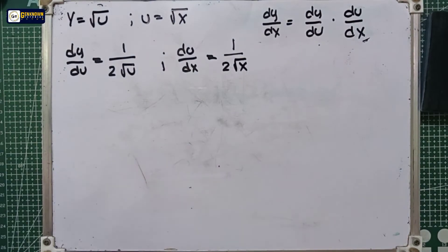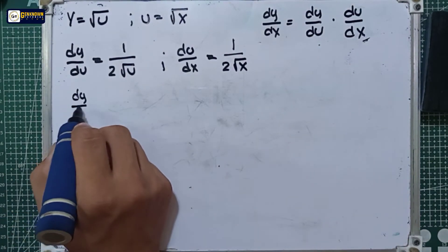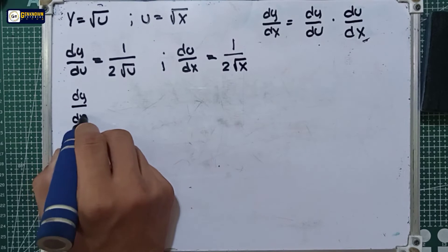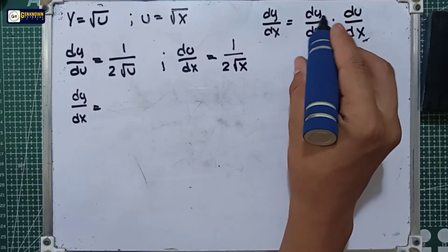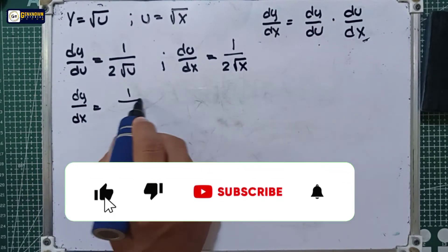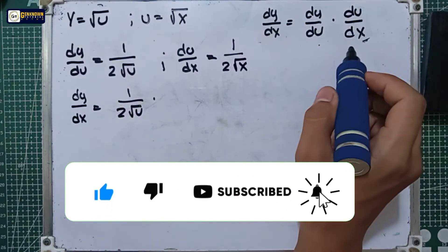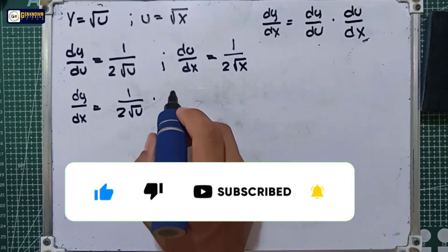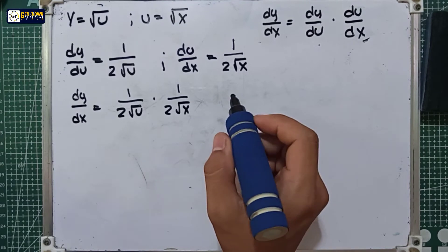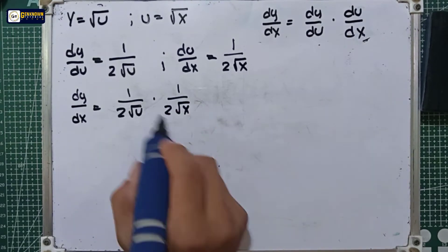We are now in the chain rule part. So dy over dx is equal to dy over du multiplied by du over dx. That is: dy over du equals 1 over 2 square root of u, multiplied by du over dx equals 1 over 2 square root of x.